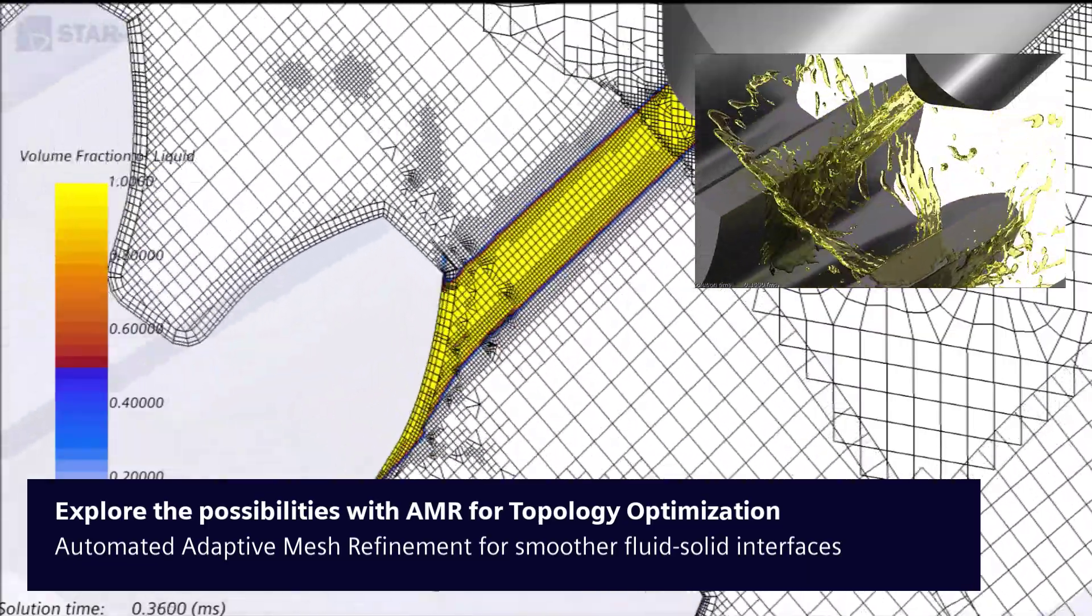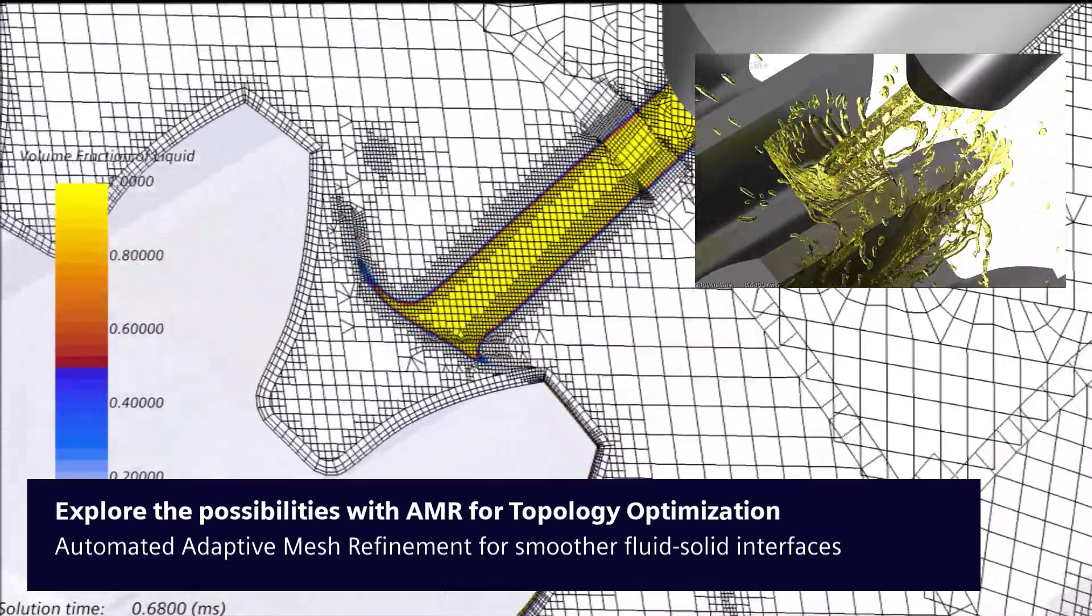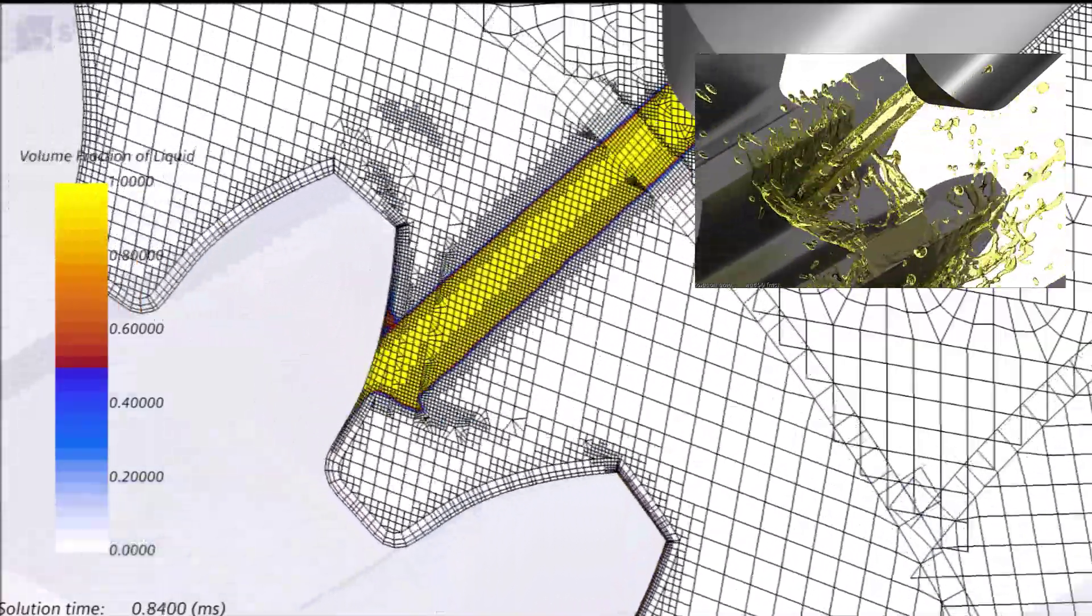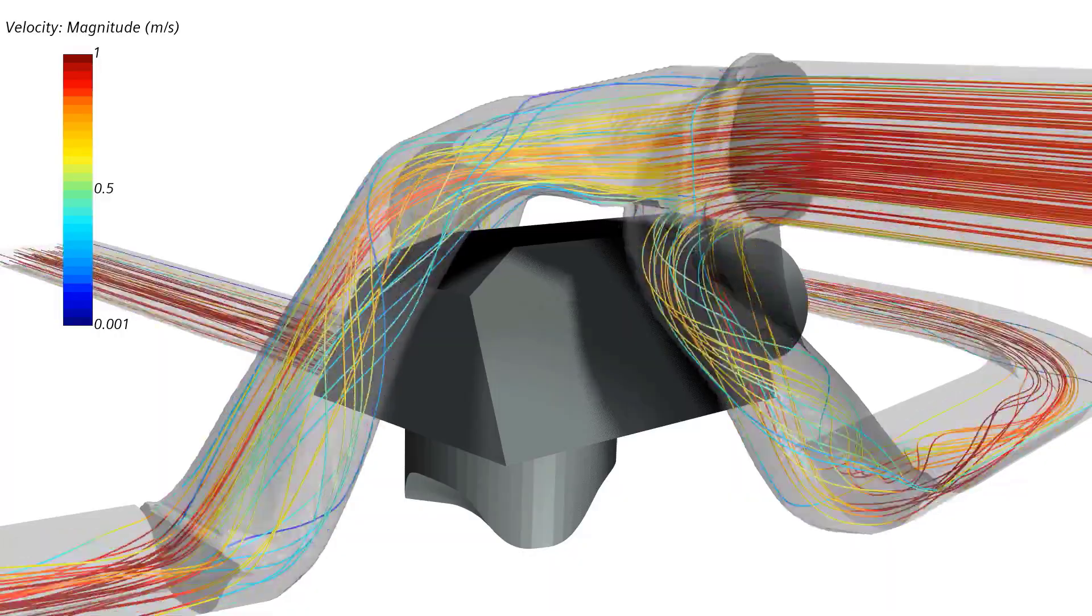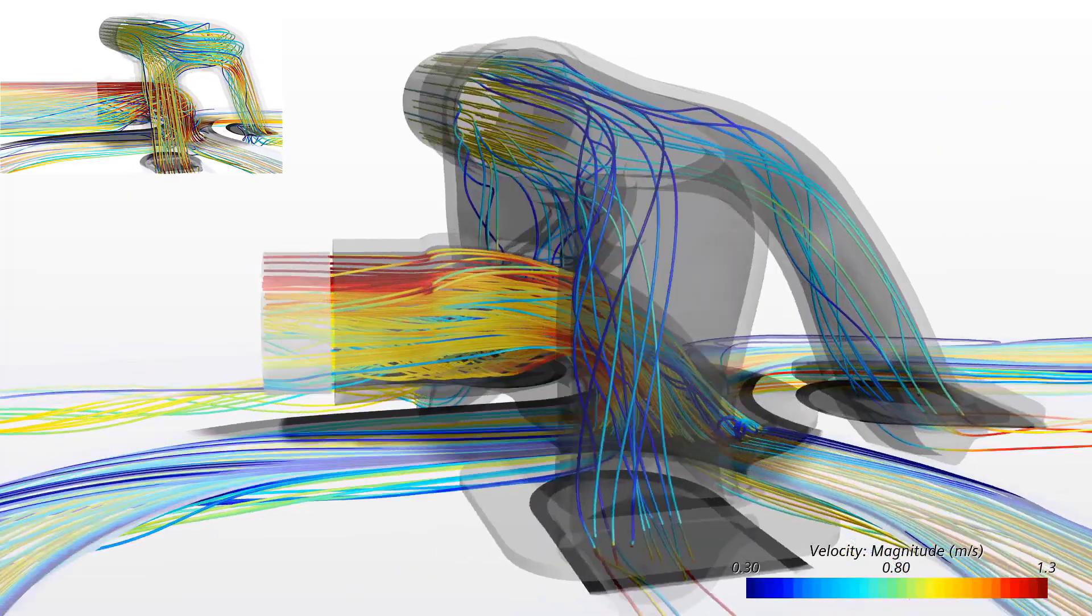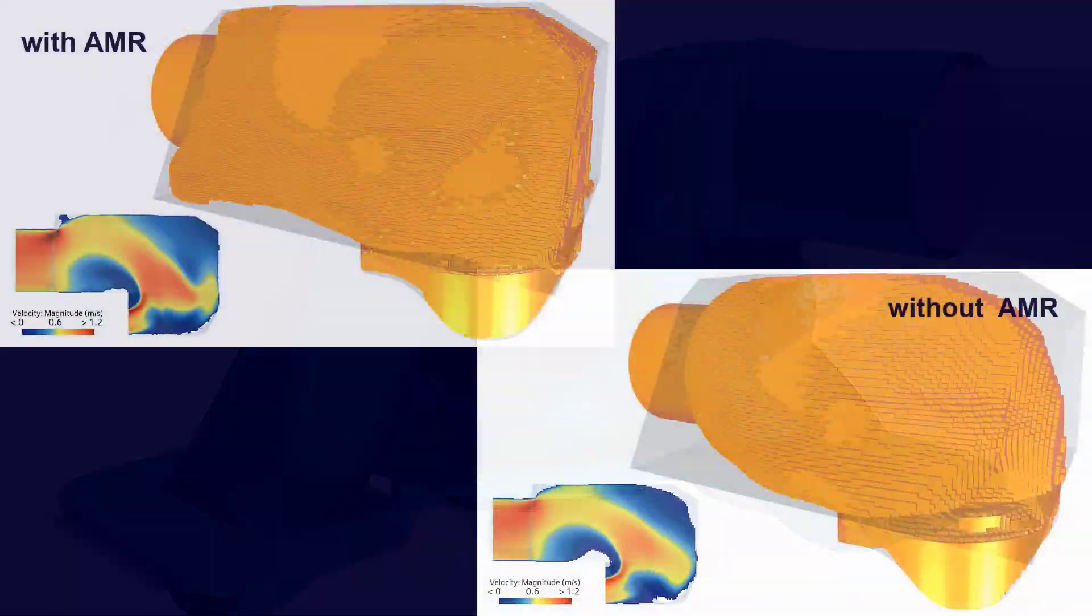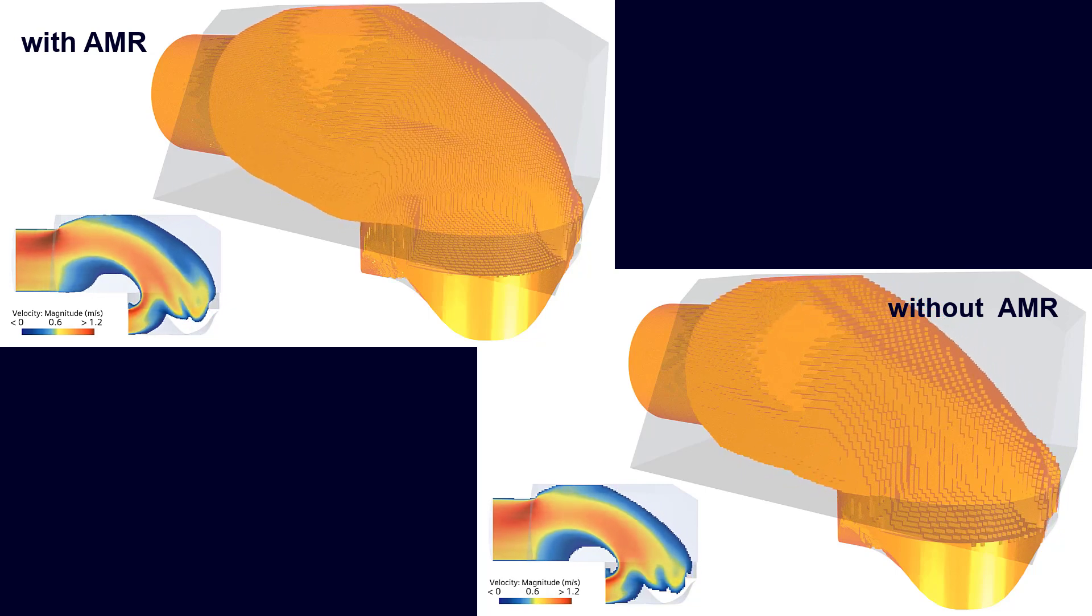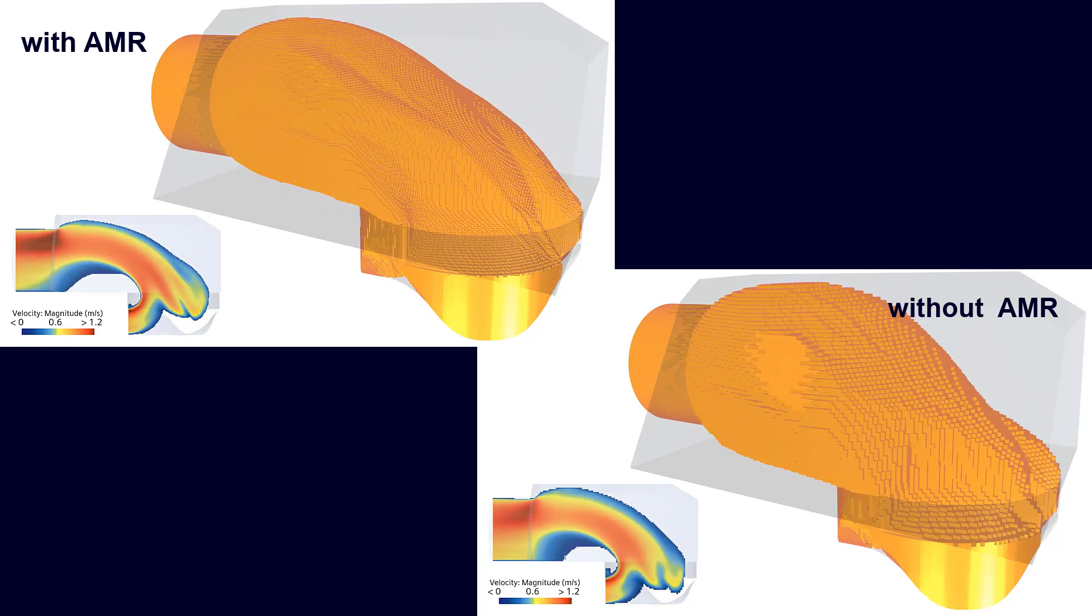Adaptive mesh refinement is a key technology to speed up simulations while ensuring accuracy and stability. Flow-based topology optimization allows you to generate completely novel and innovative designs. In Simcenter STAR-CCM+ 2210, we leverage AMR to better resolve the fluid-solid interface which represents the new forming design in the topology optimization domain.